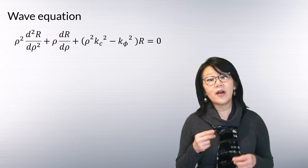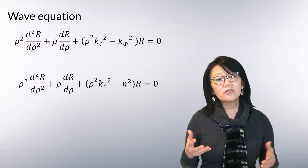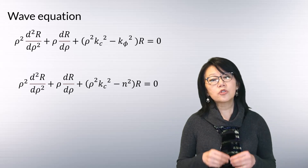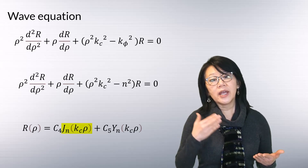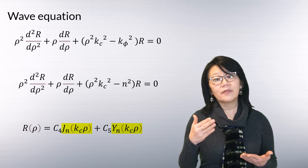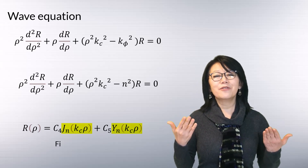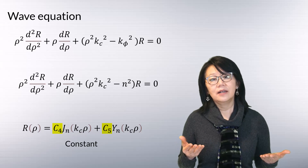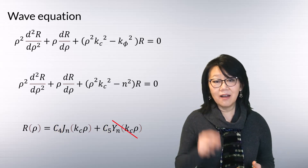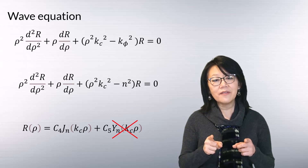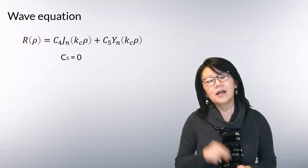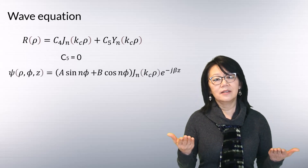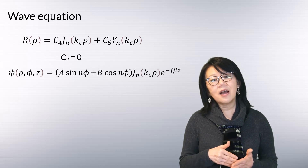Substituting the value of k_phi into the wave equation gives us a differential equation that is now reduced to Bessel's differential equation. Its general solution is of the form: J_n(k_c · rho) and Y_n(k_c · rho), which are Bessel functions of the first and second kind respectively, with constants C4 and C5. Since the Bessel function of the second kind is not applicable for a cylindrical waveguide (it diverges at rho = 0), C5 must be zero.